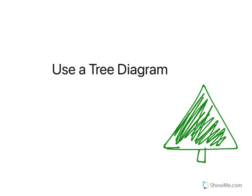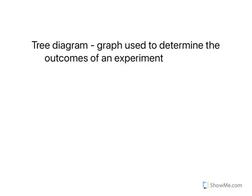Let's use a tree diagram. And no, we're not talking about the trees that grow outside that happen to be green. We're talking about tree diagrams with probability. So a tree diagram is a graph that is used to determine the outcomes of an experiment, and we can use it to calculate and find probability.